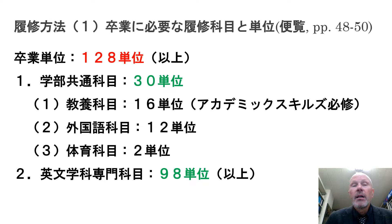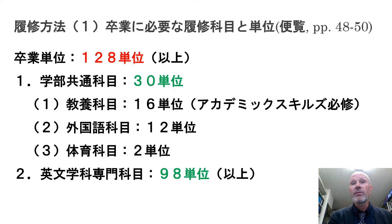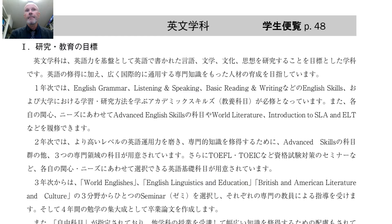Thirty of those credits come from shared courses. Kyōyō Kamoku gives you 16 credits; academic skills is required and you'll take that in your first year. Foreign language courses provide 12 credits altogether, eight of which you will take in your first year. PE physical education gives two credits — making 30 credits altogether. Then the specialized courses from the English department itself will be at least 98 credits, giving you a total of 128 in order to graduate.